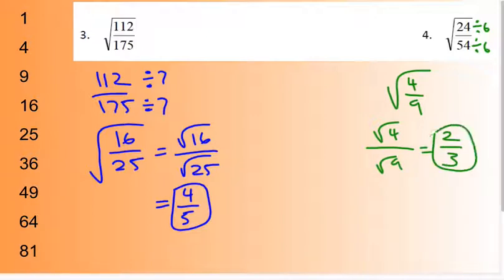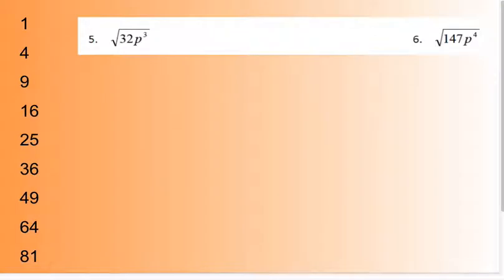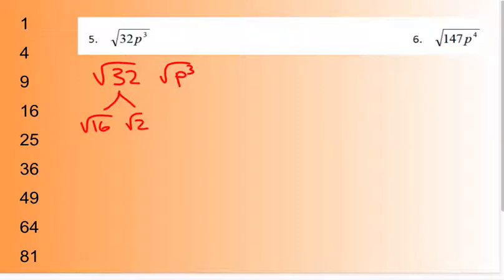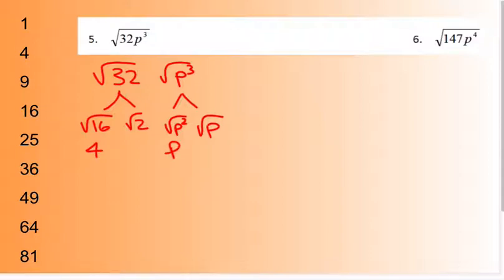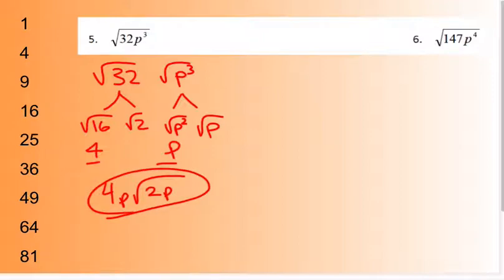When you throw variables in, you take it two pieces at a time. So √(32p³): 32 splits into square root of 16 times square root of 2. p cubed splits into p squared and just p. Square root of 16 is 4, square root of p squared is p — those go outside. Underneath I've got a 2 and a p, so the answer is 4p times square root of 2p.